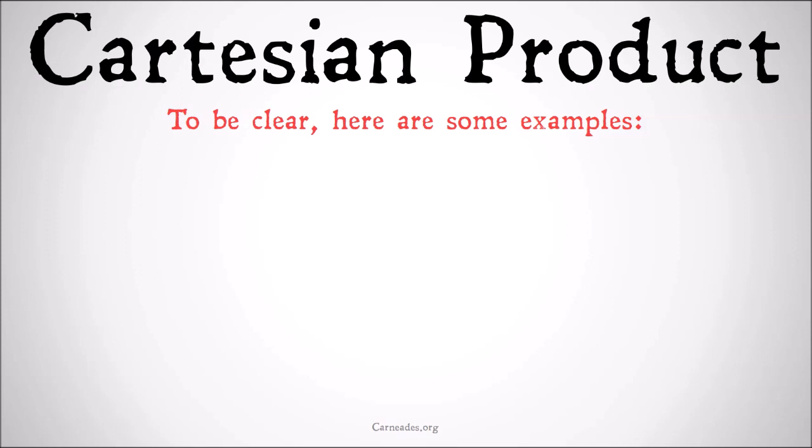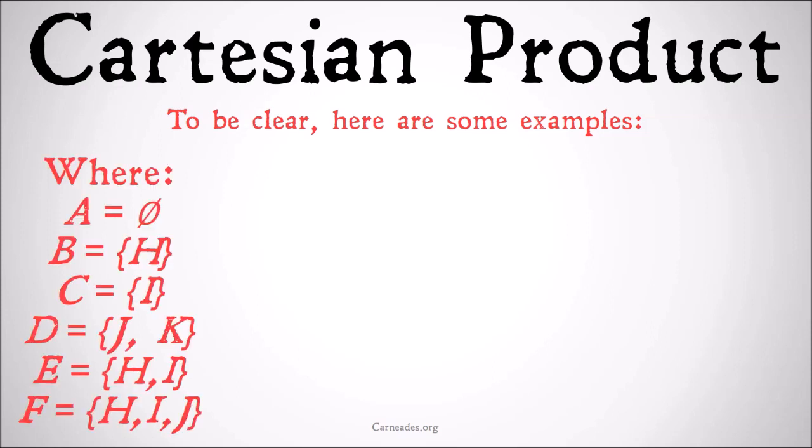To be clear, here are some examples. Where A is the null set, B is the class of H, C is the class of I, D is the class of J and K, E is the class of H and I, and F is the class of H, I, J.